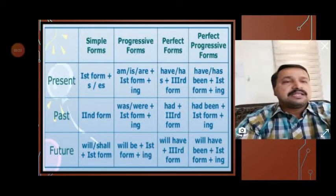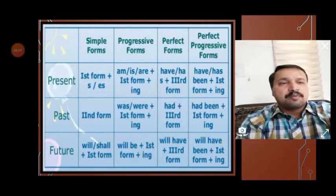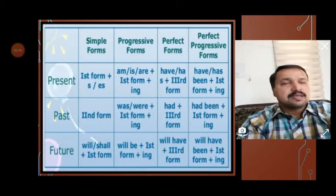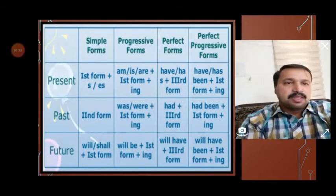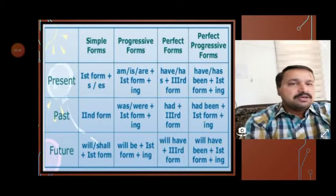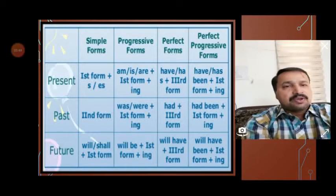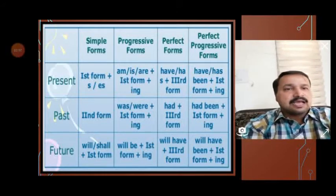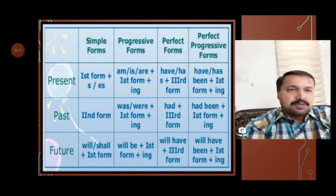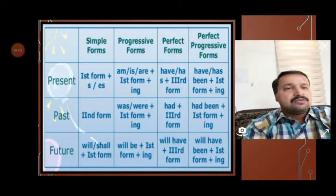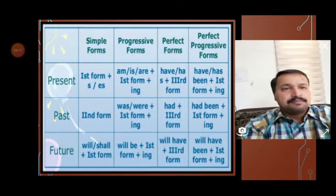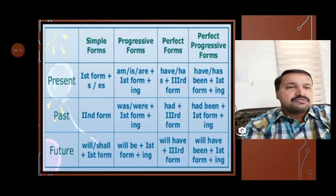Future tense uses two common auxiliaries across all future tenses: 'will' or 'shall'. 'Will' can be used with any subject, but 'shall' is used with 'I' or 'we', along with the first or basic form of the verb. Future progressive is formed with 'will be' or 'shall be' plus the '-ing' form. Future perfect tense is formed with 'will have' or 'shall have' plus V3. Future perfect progressive is formed with 'will have been' or 'shall have been' plus the '-ing' form of the verb.